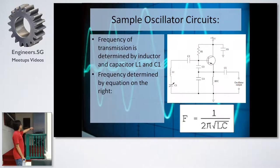Also, this inductor and the capacitor will determine the frequency of transmission. It's set by this equation, 1 over 2 pi squared LC. So you can just vary the capacitor and change the frequency of oscillation.